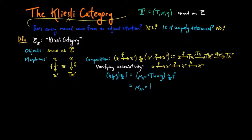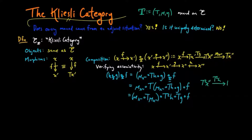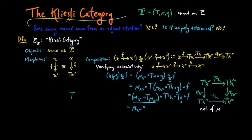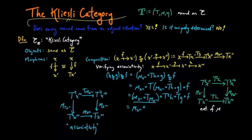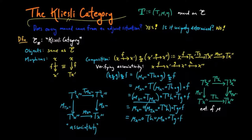Unwinding the definition of composition in E_T and applying T to the composite, we obtain mu_{X'''} T mu_{X'''} T² H TG F. We then use the naturality of mu, as indicated by the commuting diagram on the right, as well as the associativity laws of the monad, as indicated by the composition on the left, to make the substitutions of mu_{X'''} mu_{TX'''} for mu_{X'''} T mu_{X'''}, and then TH mu_{X''} for mu_{TX'''} T²H, giving us the following. The composite mu_{X'''} TG F in E is by definition the composition of GF in the Kleisli category, and similarly mu_{X'''} T applied to that morphism is by definition HGF in the Kleisli category.